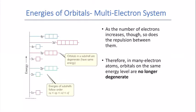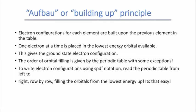To fill up orbitals from lowest to highest energy, we use the building up principle. This says electron configurations for each element are built upon the previous element in the table — we just add one more electron into the next orbital. You always add one electron at a time, placed in the lowest energy orbital available. Doing that gives the ground state electron configuration for any atom. There are some exceptions when filling up orbitals in the periodic table.